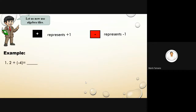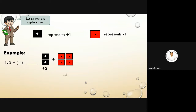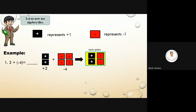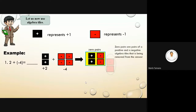Next example: two plus negative four. We have two pieces of positive one, plus four pieces of negative one. We form zero pairs — one positive one and one negative one make zero. After removing both zero pairs, the remaining tiles give us negative two.